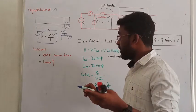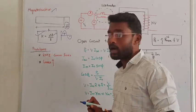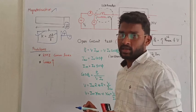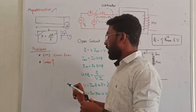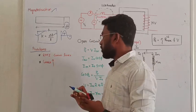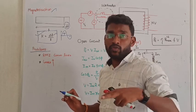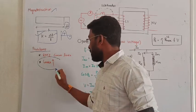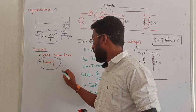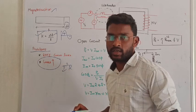In our previous lecture we discussed harmonics. Due to the injection of harmonics, the losses in the transformer will increase. The I-squared-R loss will keep on increasing because of the presence of harmonics.